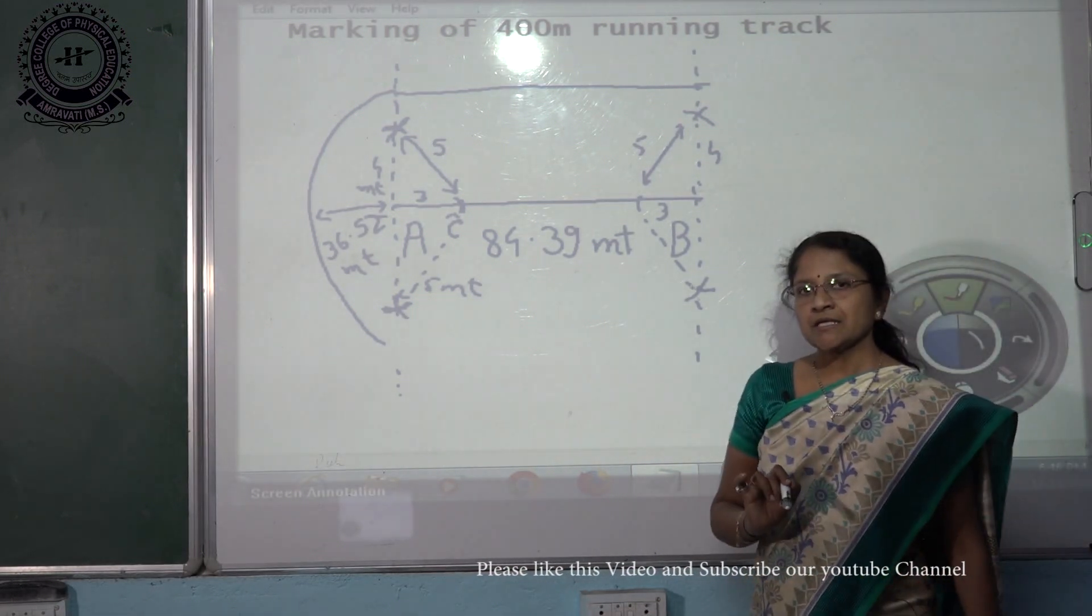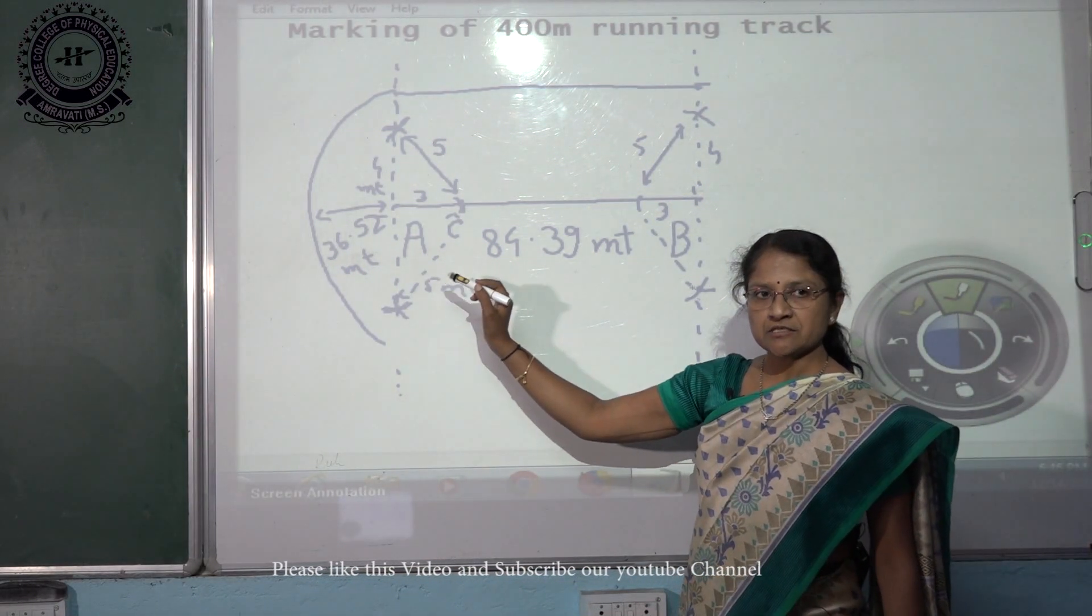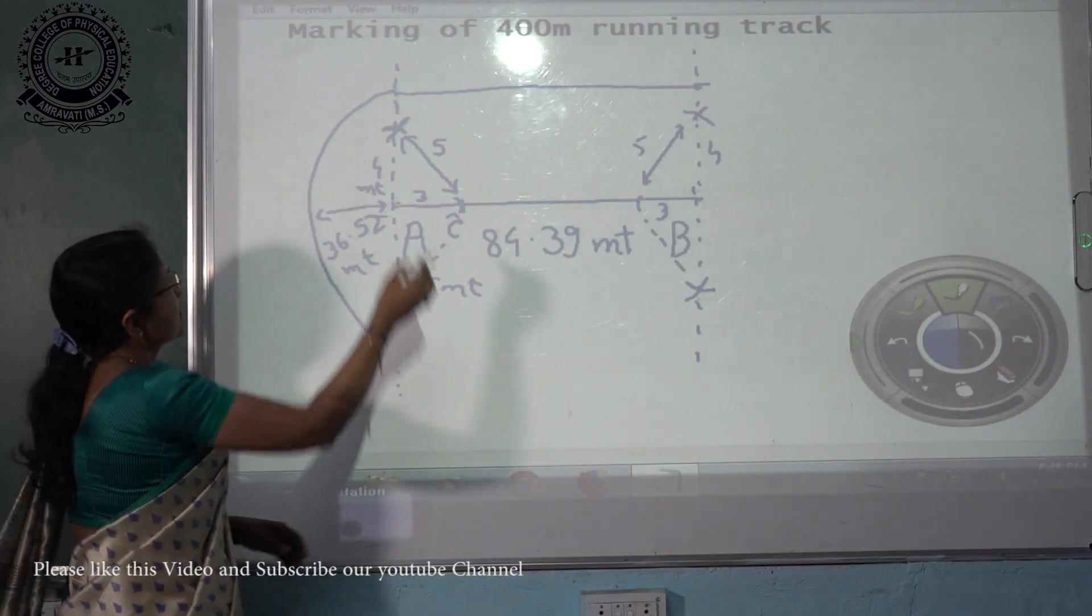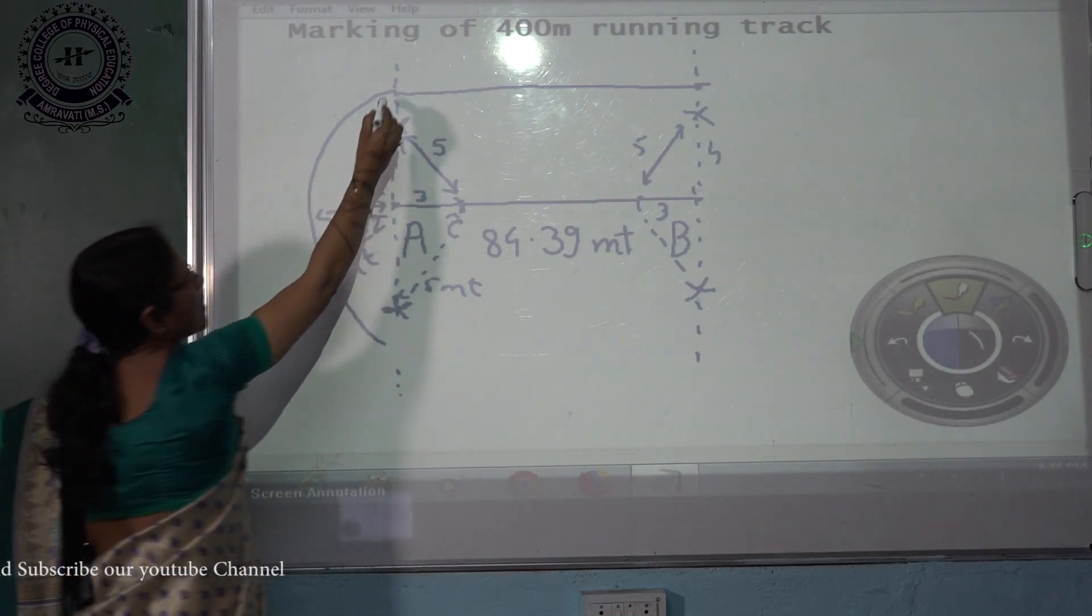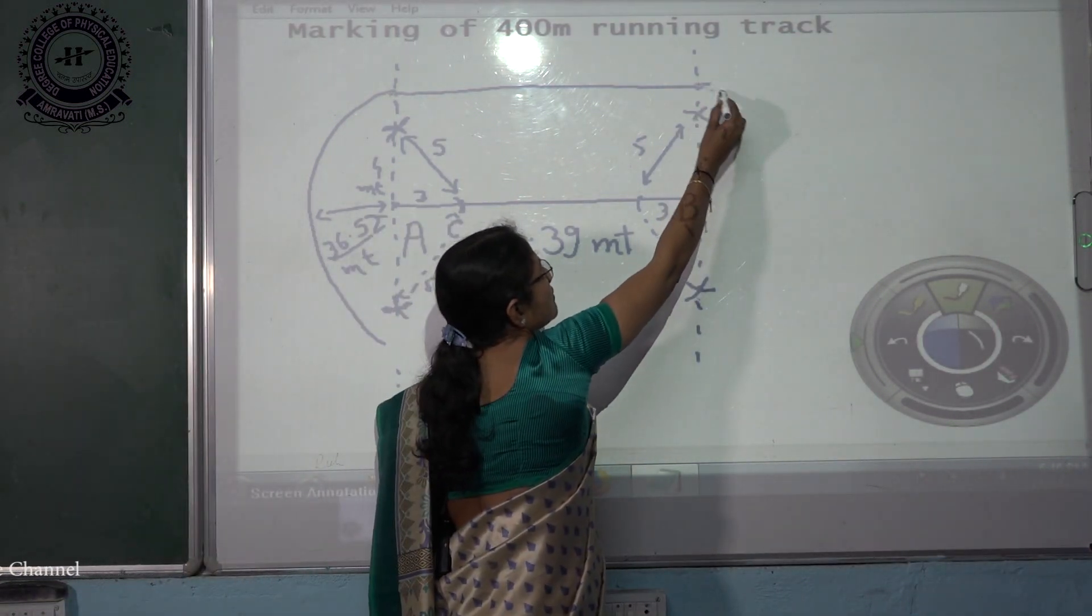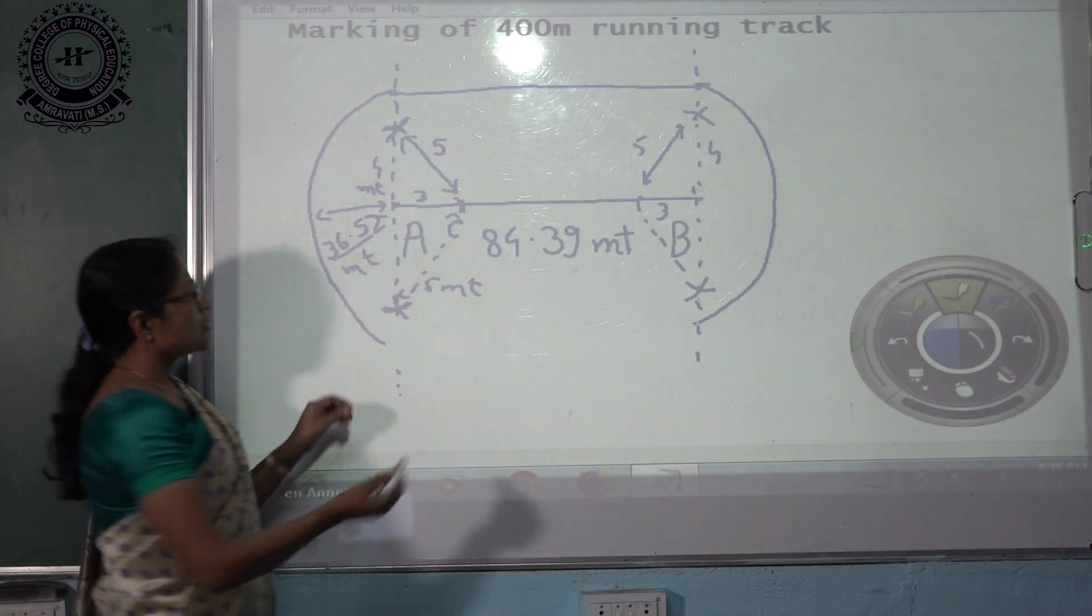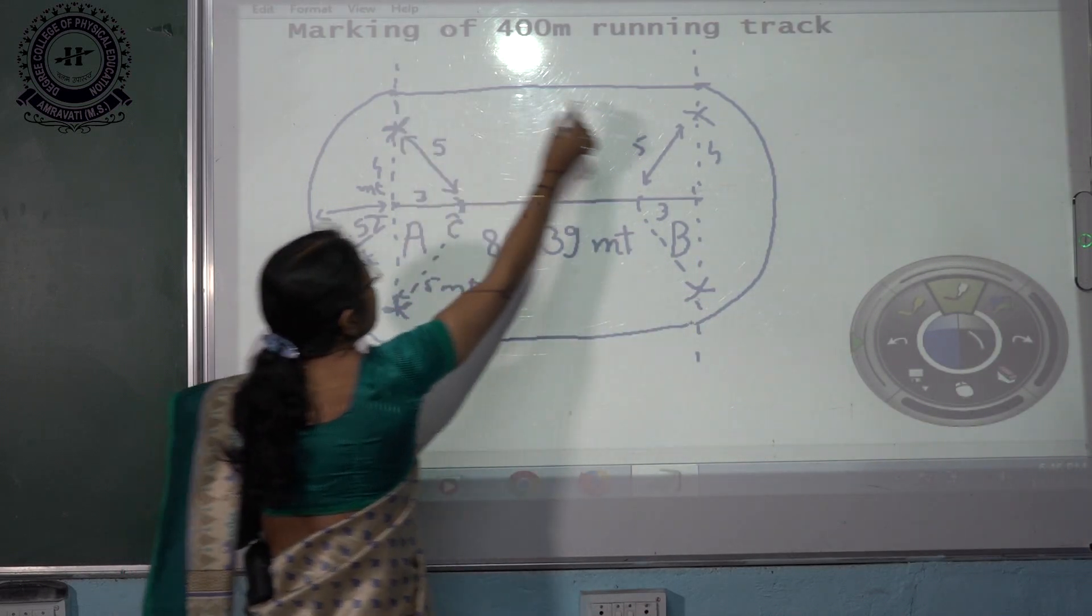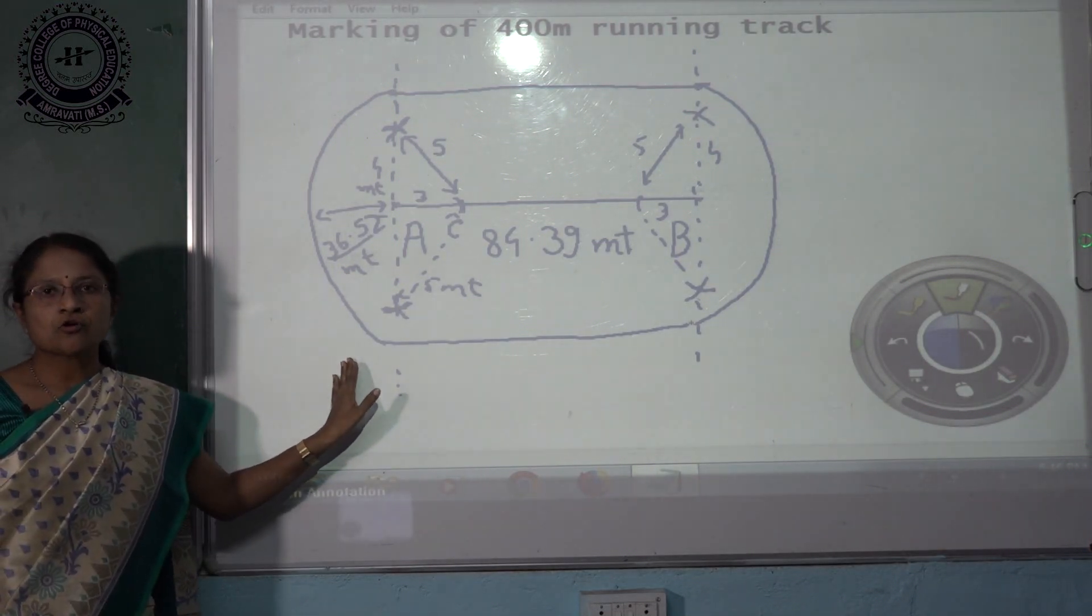Now next step is about marking our radius. Our value of marking radius is 36.52 meters. Now take A as a center and draw this curve of 36.52 meters which goes up to this dotted line, and same from here as a center, 36.52 meters. Now join these 2 curves by a straight line here and here. So in this way, this is our inner part of track.